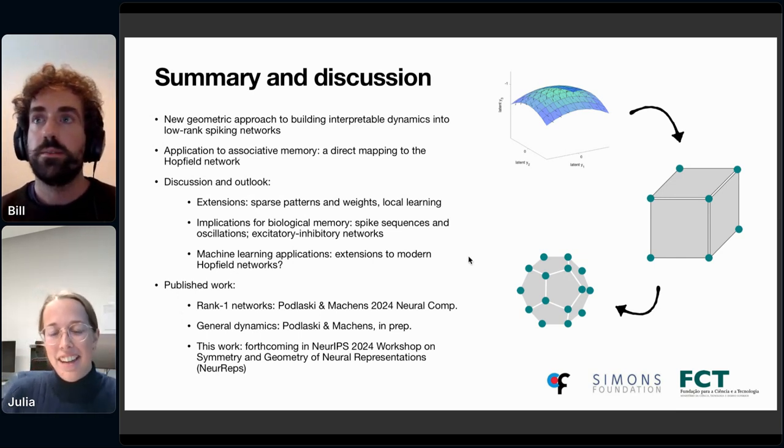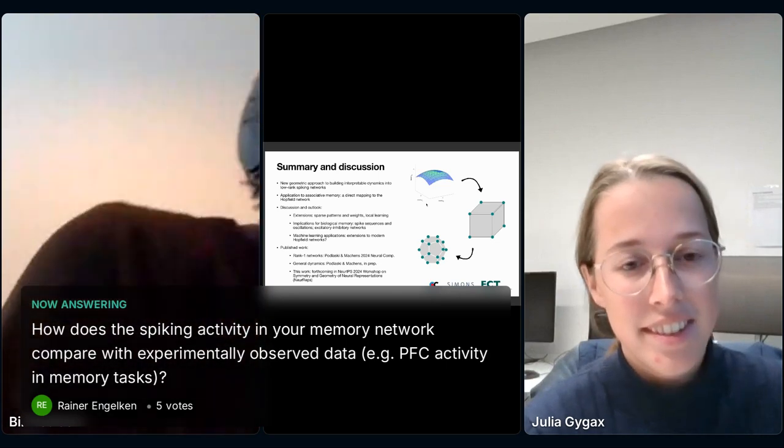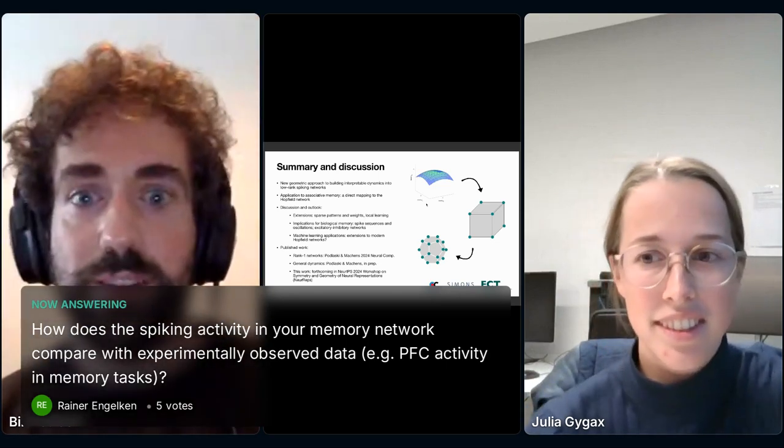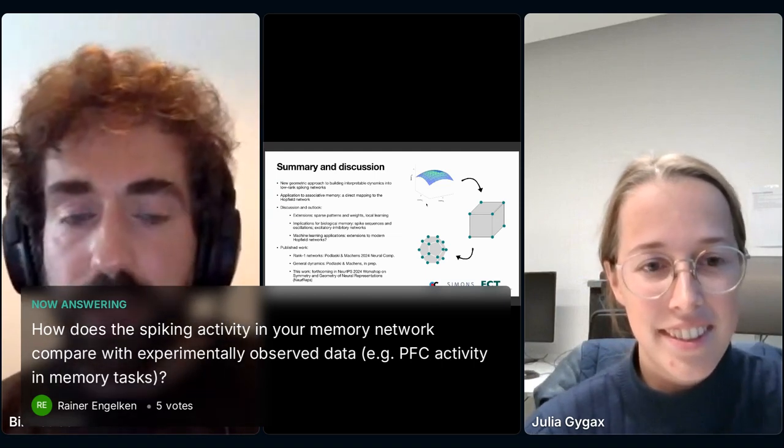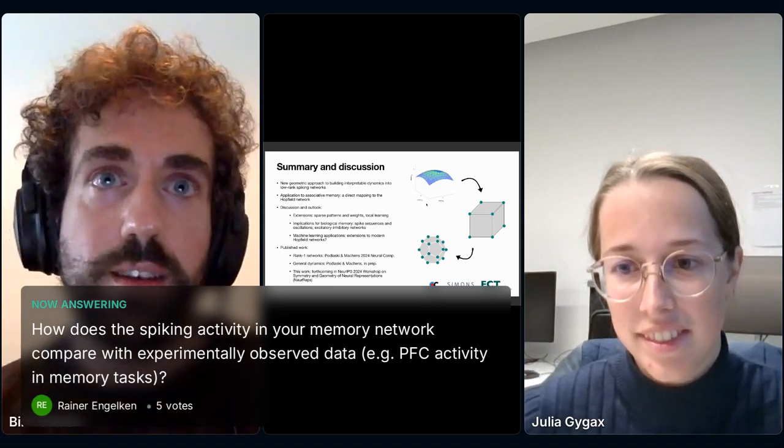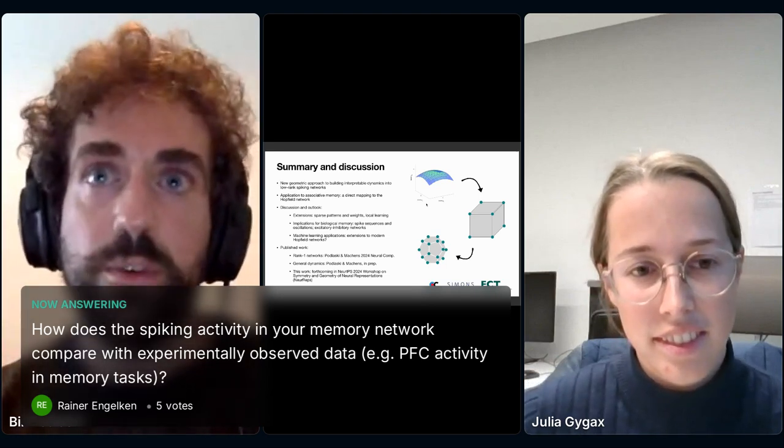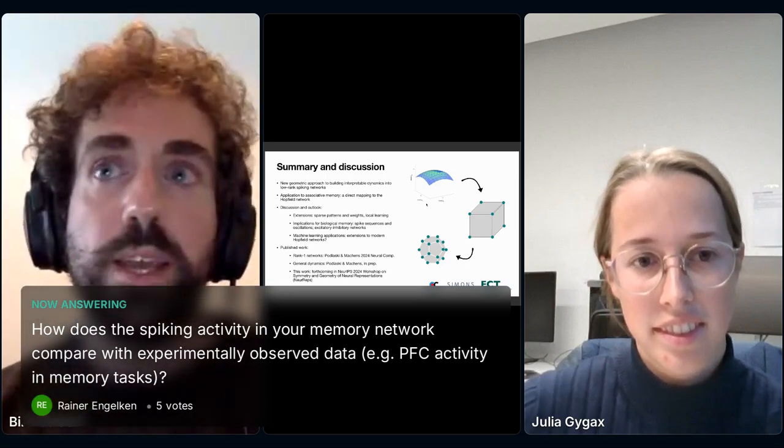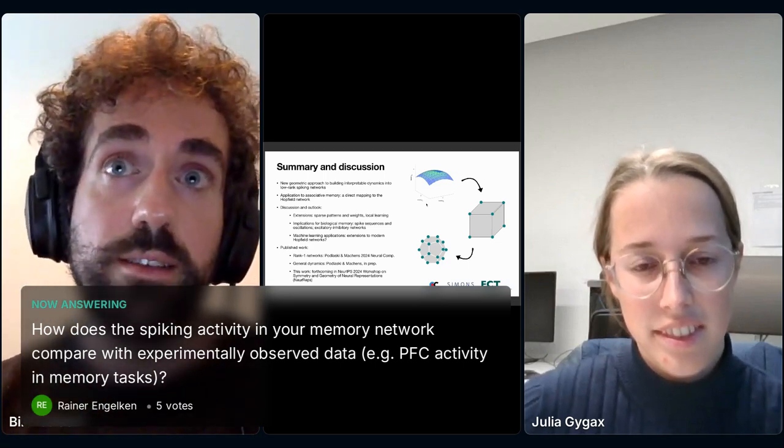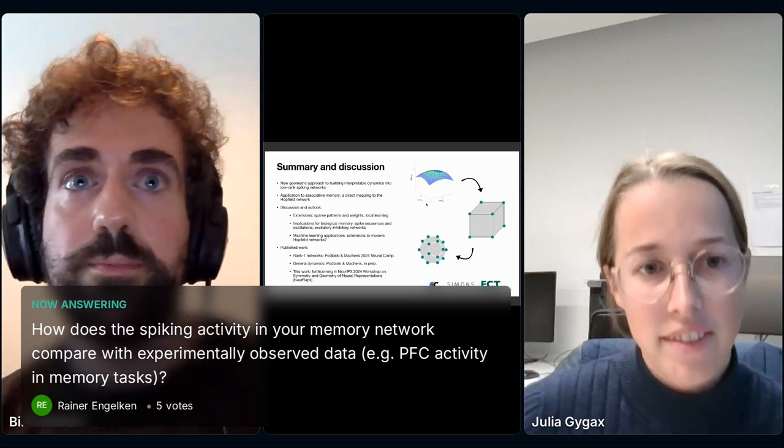The first question we have is from Rainer Engelkamp. He asks, how does the spiking activity in your memory network compare with experimentally observed data, like in PFC activity in memory tasks? Interesting question. I don't specifically know how it compares with the particular task that you're thinking of. We observed some interesting phenomena that depending on the parameters and the number of memories stored in the network, sometimes we see very rhythmic spiking patterns, very reliable rhythmic spiking patterns where one neuron always spikes and that leads to another one. Other times we see much more variable spikes such that an attractor state can result in variability between the spikes that occur, but we haven't yet related it to data.